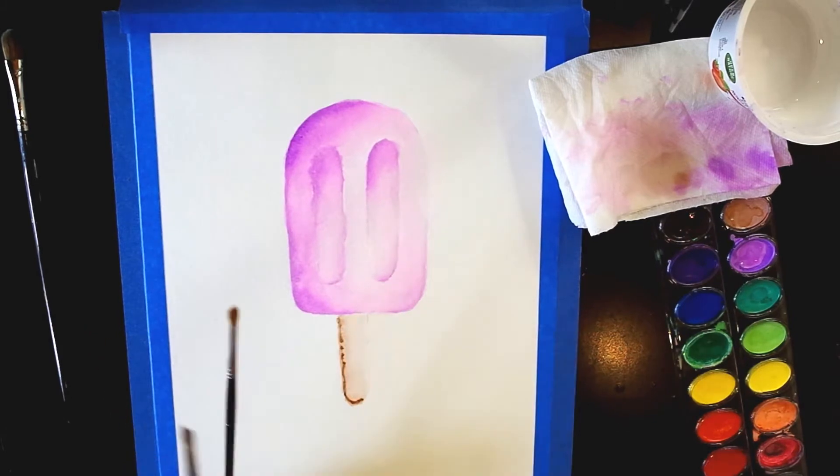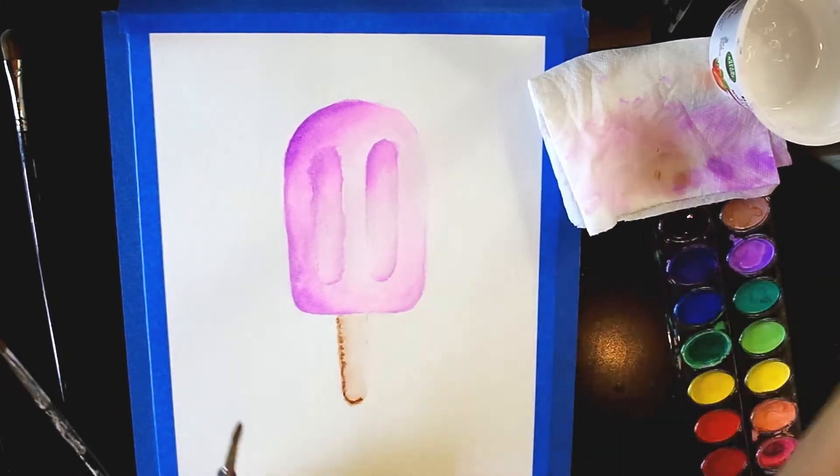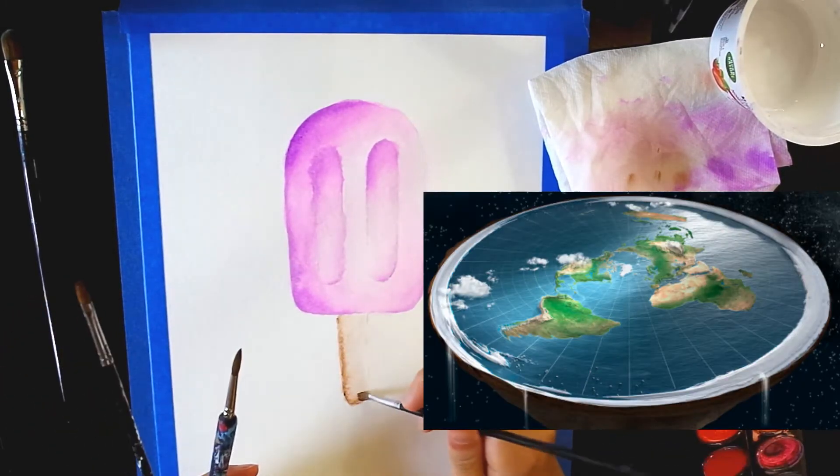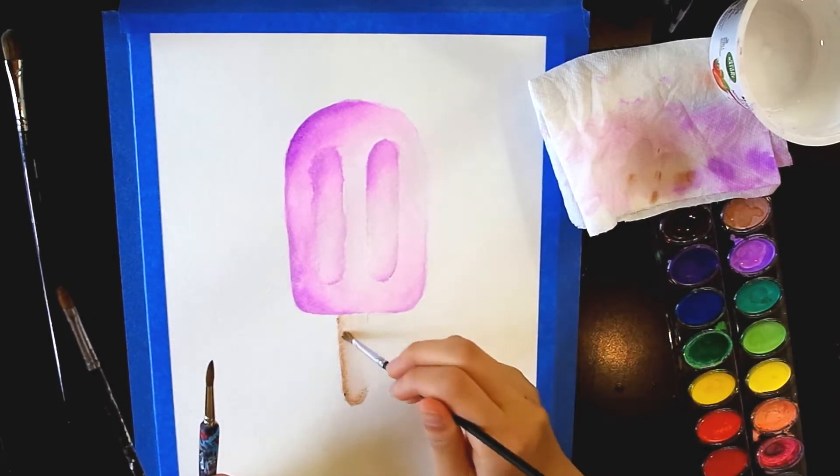Use brown to add shading. Now you may be saying this stick has no dimension, it's flat. Well, it actually has shadows cast upon it from the popsicle.